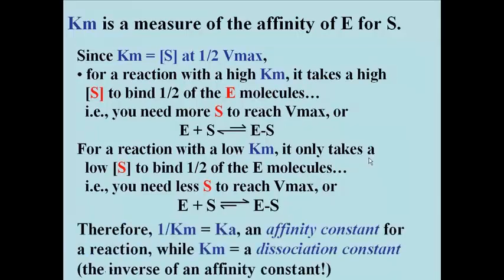Km is actually a dissociation constant. It's a measure of how likely E and S are to remain apart, which means that the reciprocal of Km, or 1 over Km, is a measure of how attractive E and S are for one another. 1 over Km is generally thought of as an affinity constant. It's a measure of how likely it is for enzyme and substrate to come together. The higher the Ka, the stronger the affinity. The higher the Km, the more likely E and S are to remain apart or to dissociate.